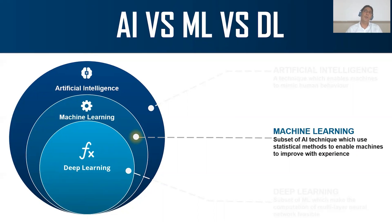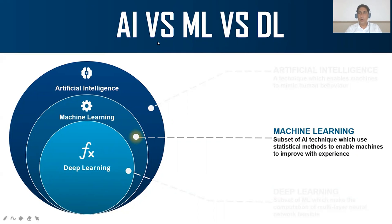In machine learning, we input data, and the hidden insights within that data are extracted. The machine is trained on those insights, and then a model is built. After the model is built, we check whether the predictions and outcomes match. This splits into two parts: testing — to check if the predicted outcomes match our expected outcomes — and further training, to improve the machine on additional hidden facts in the data. That is machine learning.